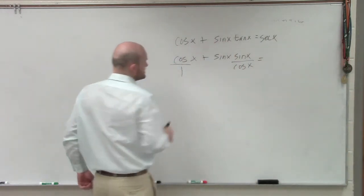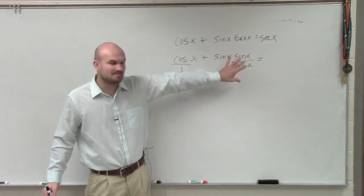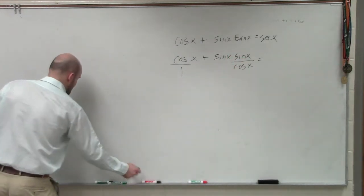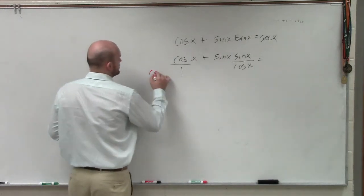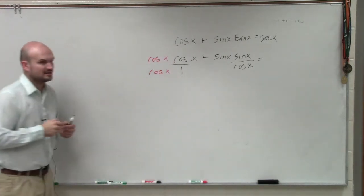So therefore, I look at this and I say, all right, well, this term times this term, what is my common denominator? And it's going to be cosine. So therefore, I'll multiply over here by cosine of x on the top and the bottom.